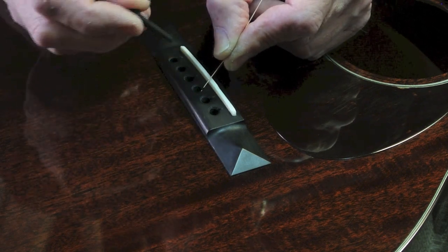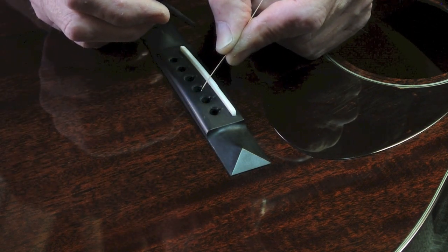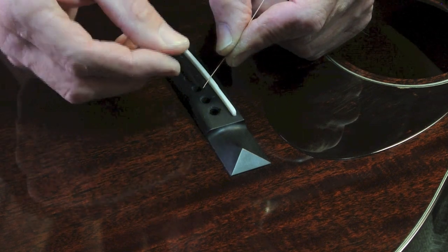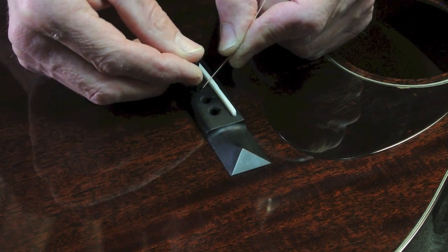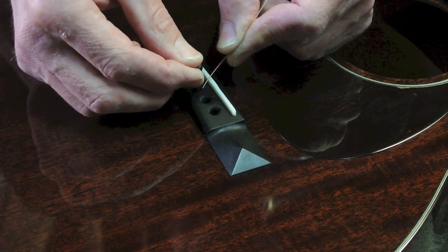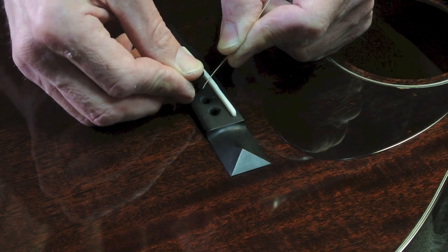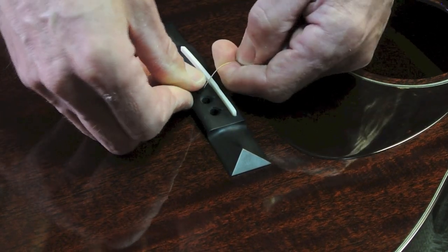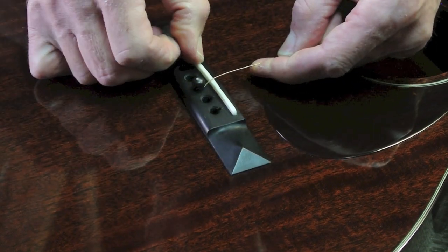So, here we go. I've got the ball end pulled up where it's just contacting the bridge plate underneath the bridge. The bridge pin's going in and I'm holding the string as I do it so that it stays in its position. And as I'm pushing this down, a little pull on here, and I make sure everything's in really nice and snug.